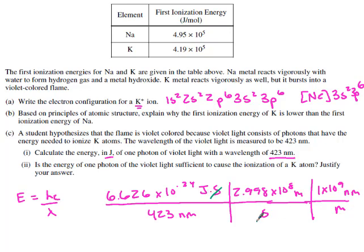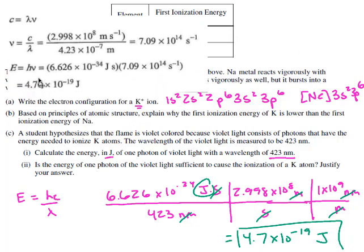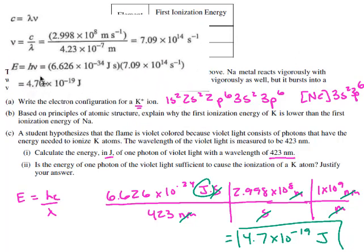To convert wavelength to energy using the combined equation E = hc/λ: all units cancel except joules, giving 4.7 × 10⁻¹⁹ joules. You could also solve it using two equations—first solving for frequency then converting to energy—and get the same answer.